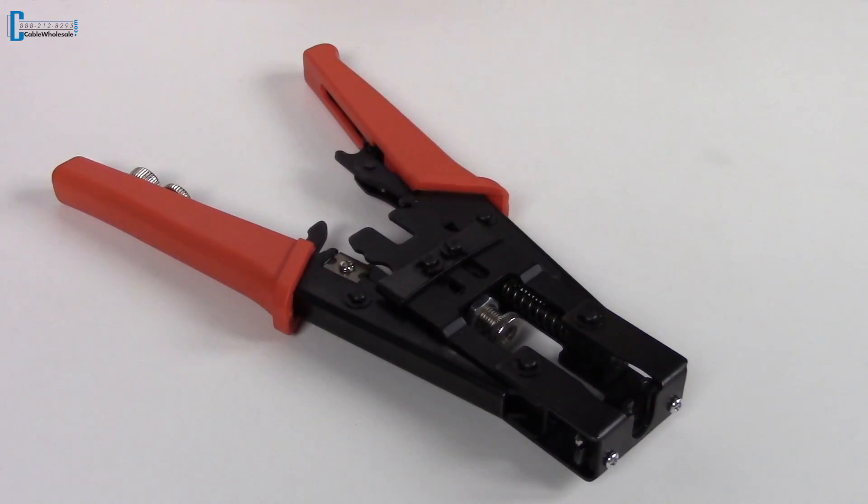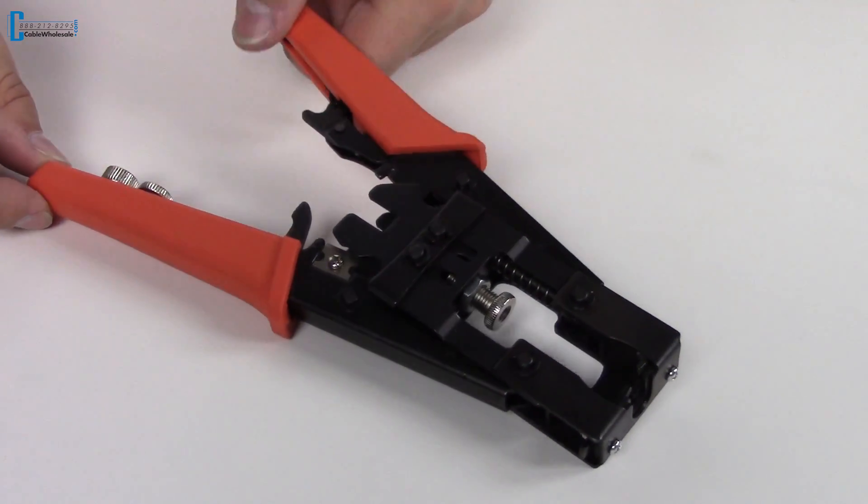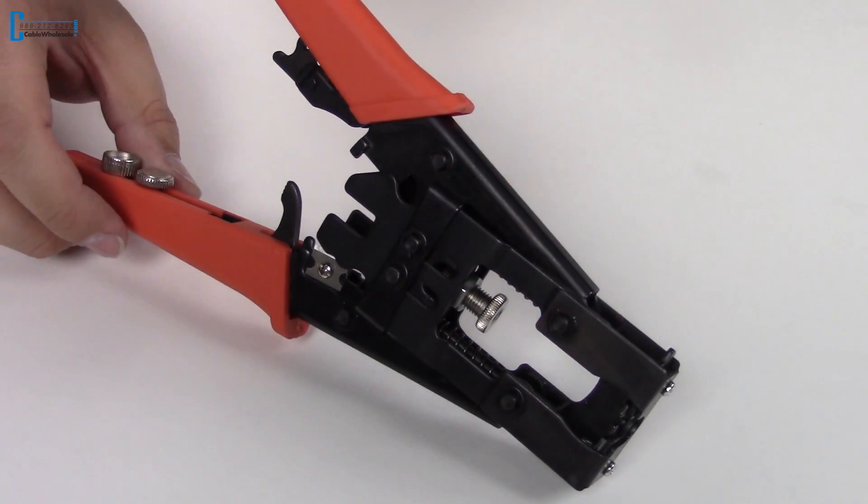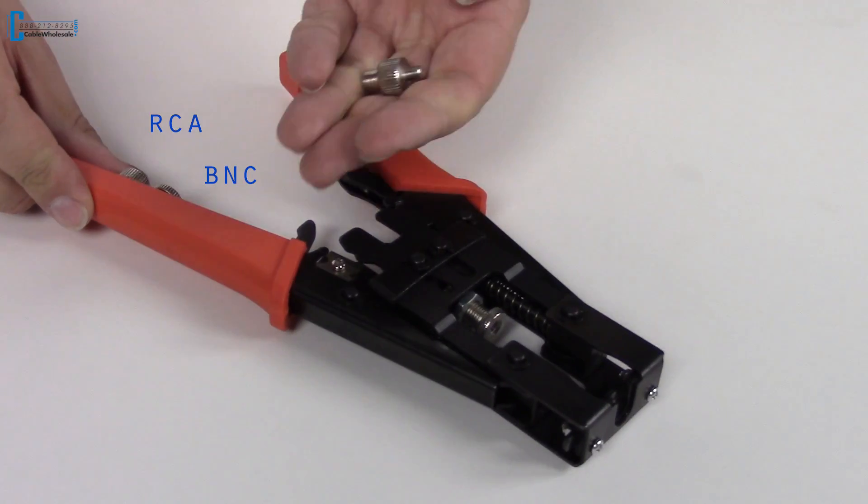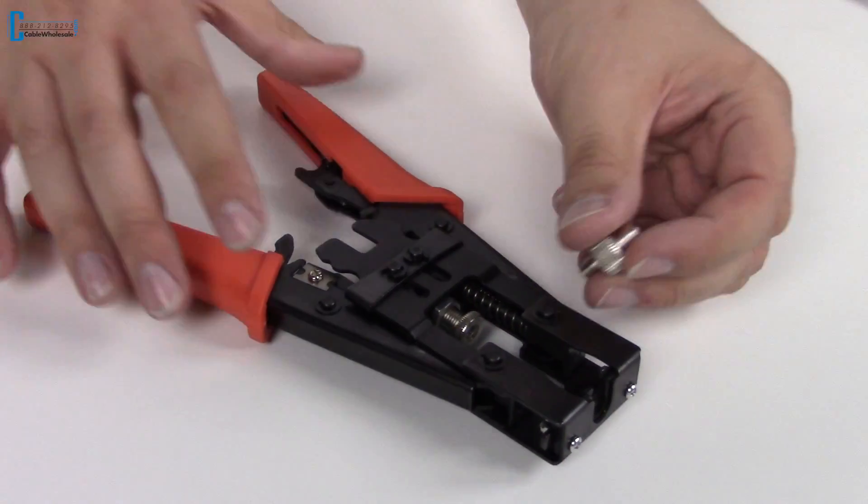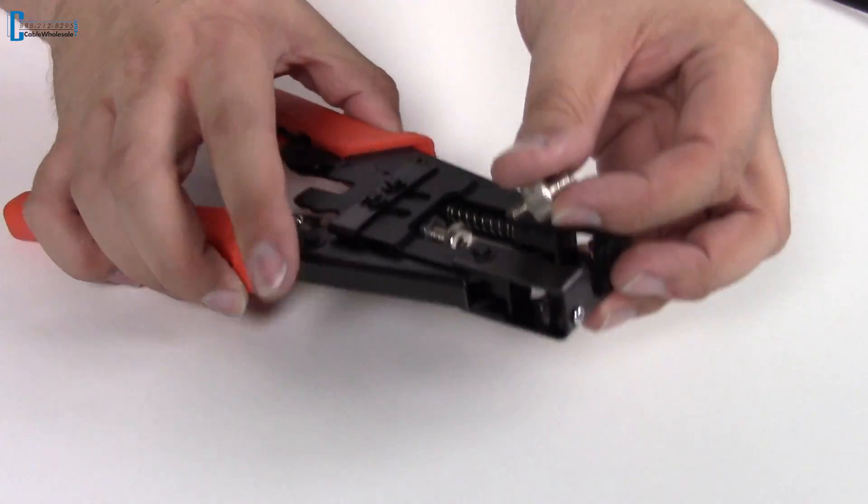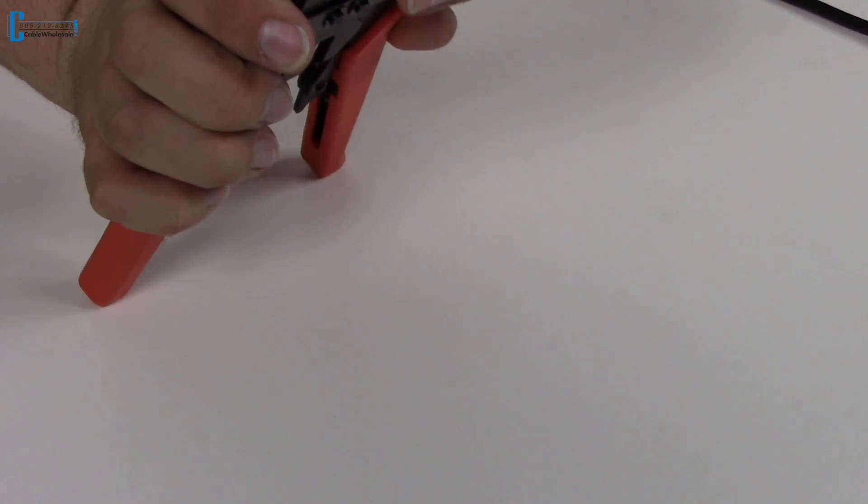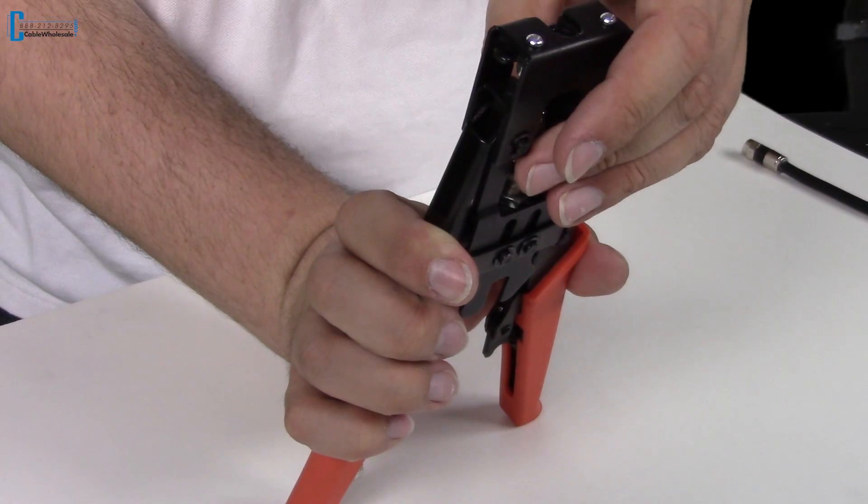Now, let's take a look at the compression tool. The compression tool comes with three dies. One for BNC, one for RCA, and one for F-pin. Since we're using an F-pin connector, we'll choose the appropriate die. Simply screw it in at the top and you're ready to go.